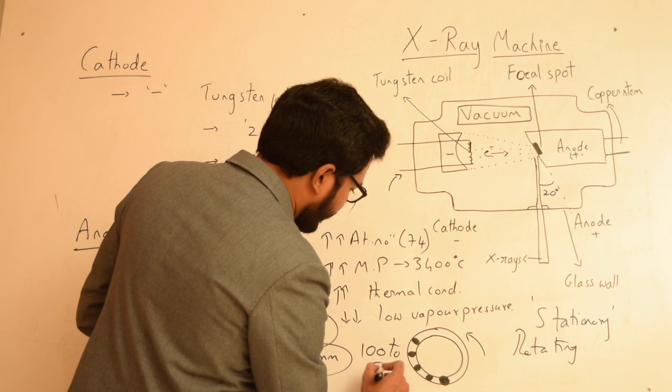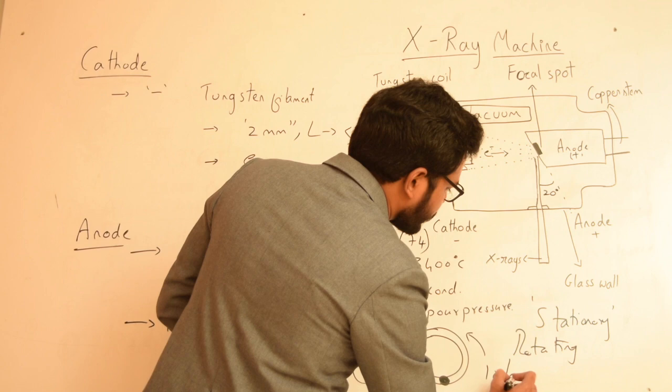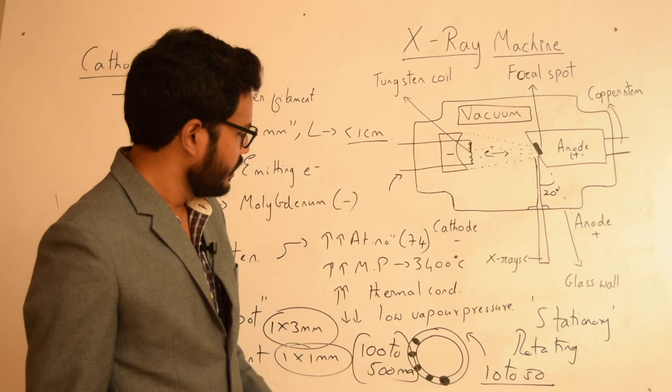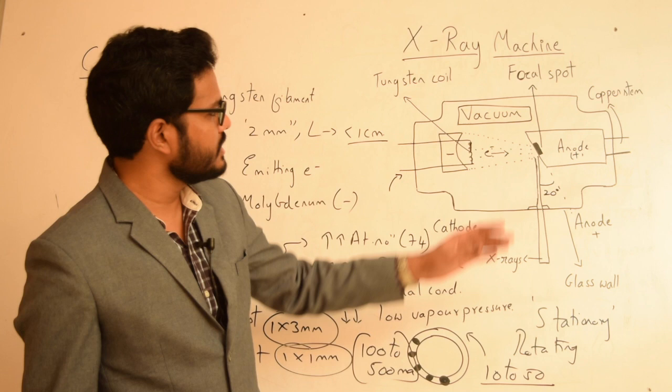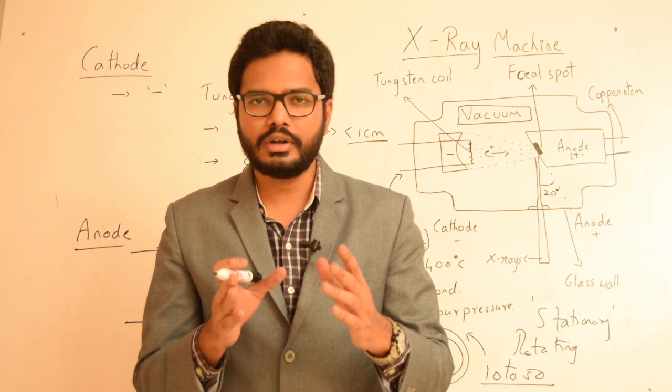Rotating anodes can be operated with currents of 100 to 500 milliamperes, which is 10 to 50 times greater than the current used with stationary anodes. Rotating anodes are mainly used when higher doses of radiation are needed for sustained durations, such as in computed tomographic (CT) machines for medical use, whereas stationary anodes are sufficient for dental uses.